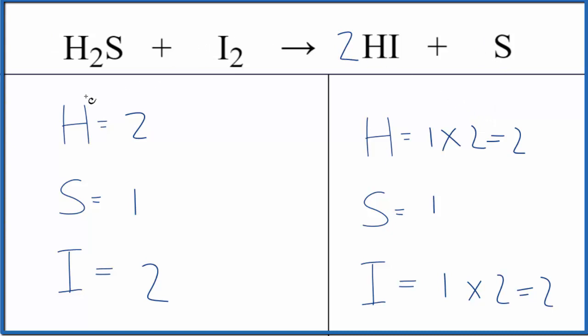This is Dr. B with the balanced equation for H2S plus I2 yields HI plus S. And the type of reaction is single displacement. Thanks for watching.